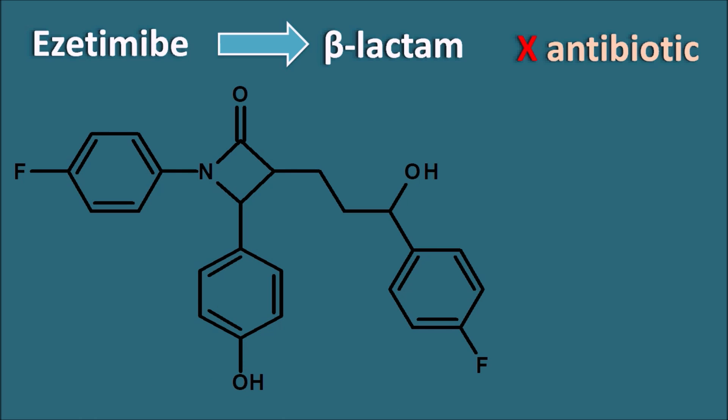We can observe in this structure that the central ring is the beta-lactam ring. Why is it called beta-lactam? We can observe that the carbonyl group is present. To this carbonyl group, this is the alpha-carbon, and this is the beta-carbon. So to this beta-carbon, a nitrogen is attached in the form of a cyclic amide. So it is called beta-lactam.